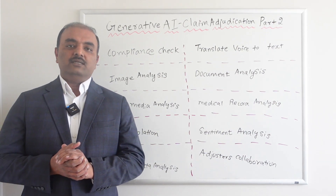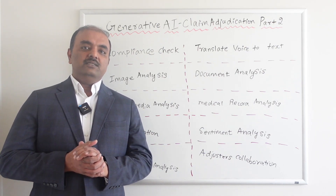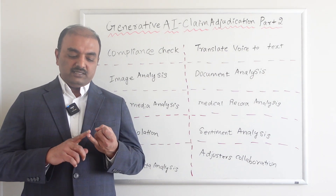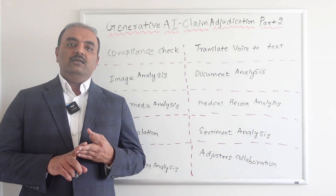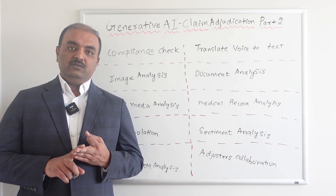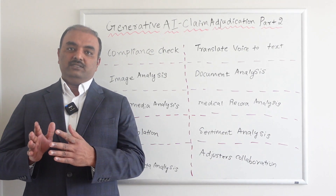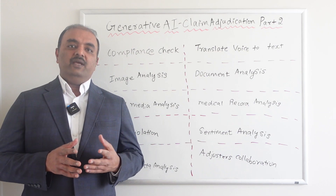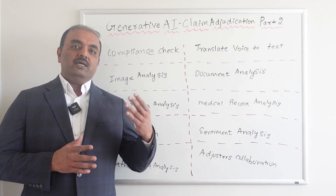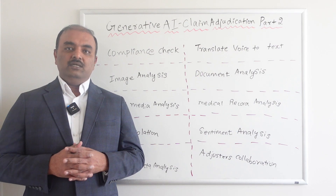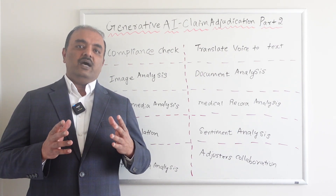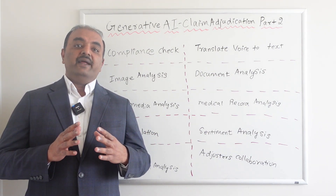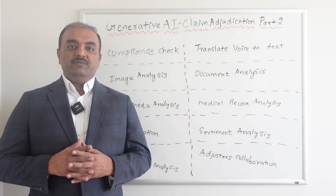The first one I wanted to talk about is Compliance Check. We all know P&C Insurance is a highly regulated industry, which means policy data, claims data, and billing data — everything has to be sent to the Department of Insurance. So we have to have a robust compliance process. Without Generative AI, adjusters have to look at each claim and make sure there is no inaccuracy before reporting to the Department of Insurance. With Generative AI and its capability to handle data in huge volume, it can make sure that all existing claims are compliant with Department of Insurance rules and regulations.